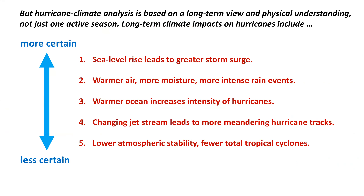I'm going to focus on three particular climate-hurricane factors, which I like to rank in terms of their certainty. First, sea level is rising — one of the most robust projections of a warming climate — and that will lead to greater storm surge. Second, warmer air holds more moisture, more water vapor, and that can lead to more intense rain events. Third, and this has received an enormous amount of attention, there is now a strong consensus that a warmer ocean is increasing the intensity of hurricanes — it's not necessarily making more hurricanes, but those that do form can get more intense.